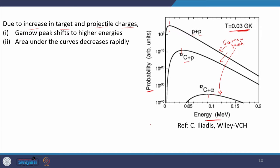The area under the curves decreases rapidly. The area of the Gamow peak changes with the charges of the target and projectile, which in turn determines the Coulomb barrier. In this slide I am showing the relation between the Gamow peak and the charges of target and projectile, and also the impact on the area of the peak, which is decreasing rapidly as the Coulomb barrier increases — because the Coulomb barrier increases with the charges of target and projectile.